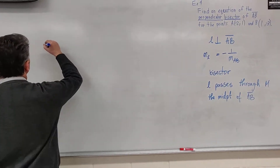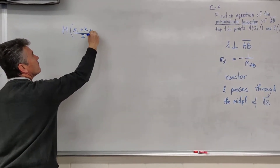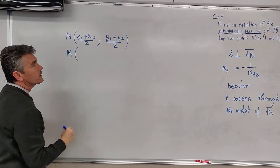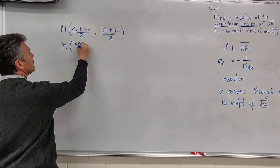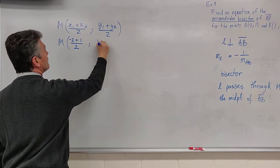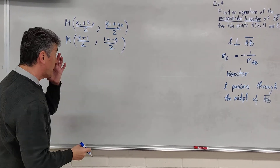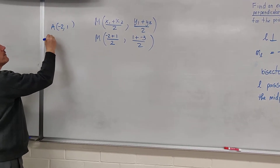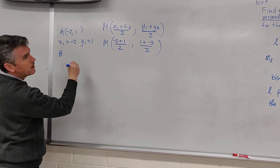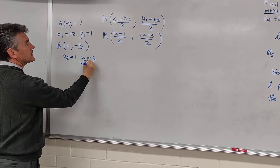I'm going to start with point M. I'm going to write down the definition. M is the average of the x-coordinates of A and B, and the average of the y-coordinates of A and B. M has coordinates: negative 2 plus 1, divided by 2, and 1 plus negative 3, divided by 2. So A has coordinates negative 2 and 1, which means x-sub-1 is negative 2 and y-sub-1 is 1.